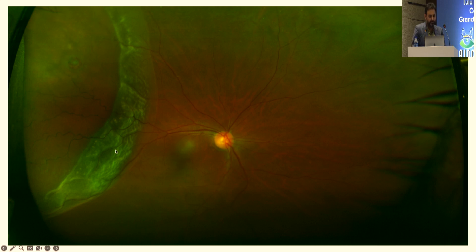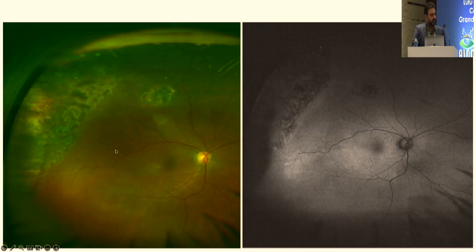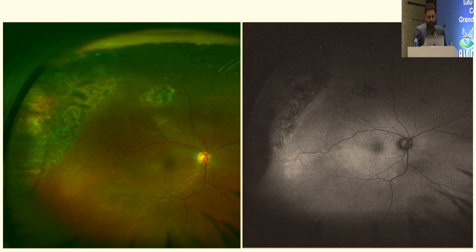This patient was managed with vitrectomy. That's what the outcome was — both layers of the schisis were barraged together, hence those confluent scars. This patient did well. The surgery was performed with vitrectomy, buckle, and gas.